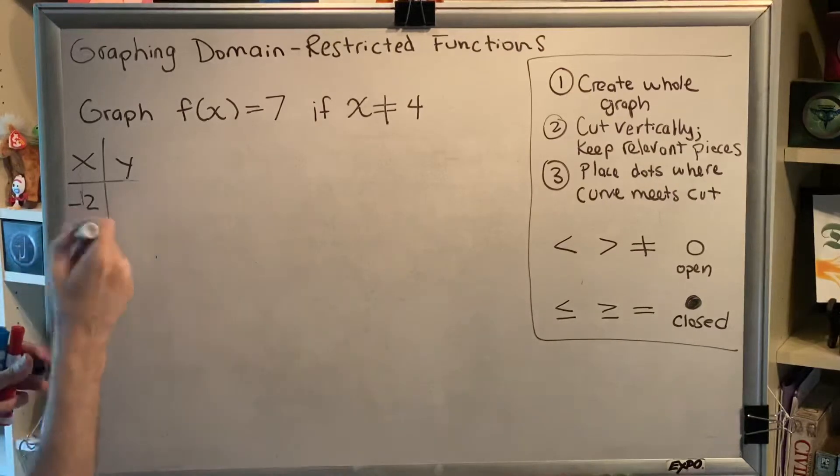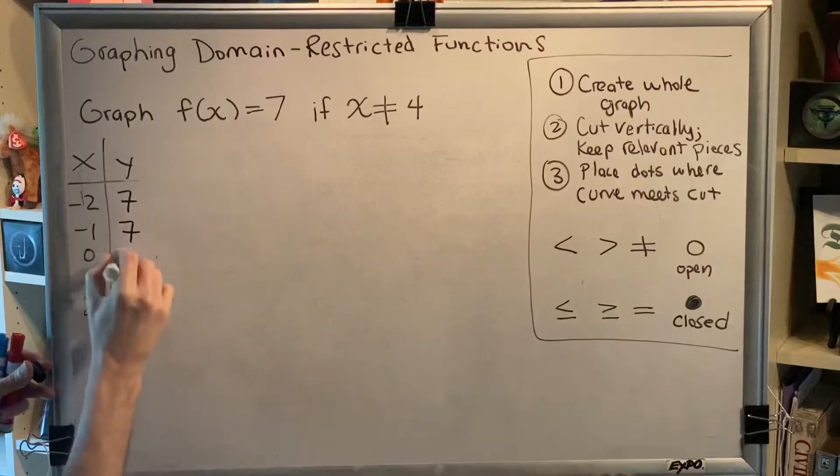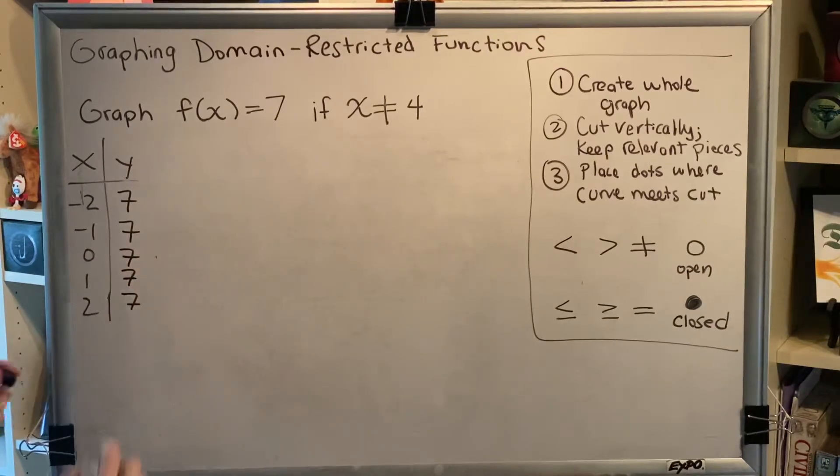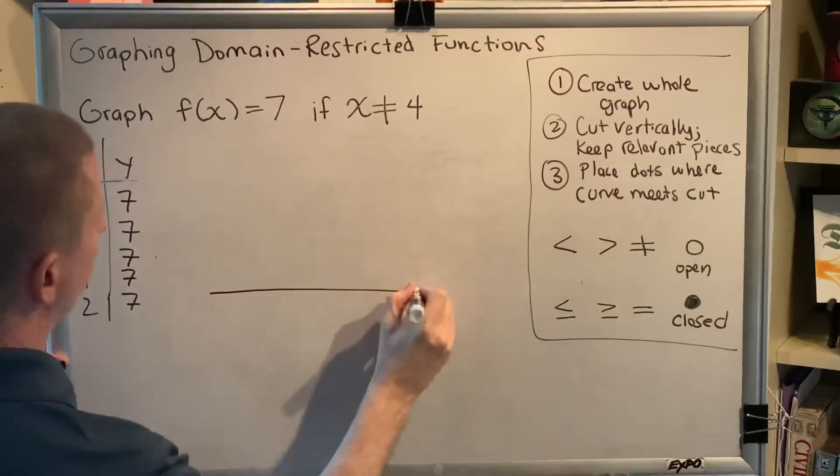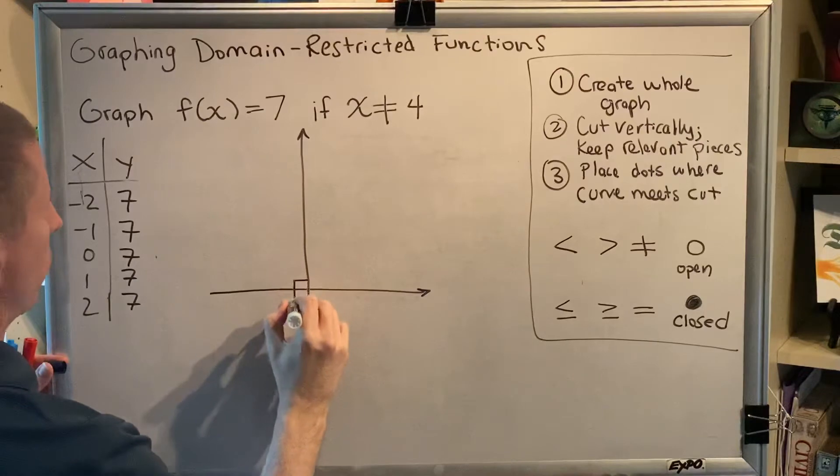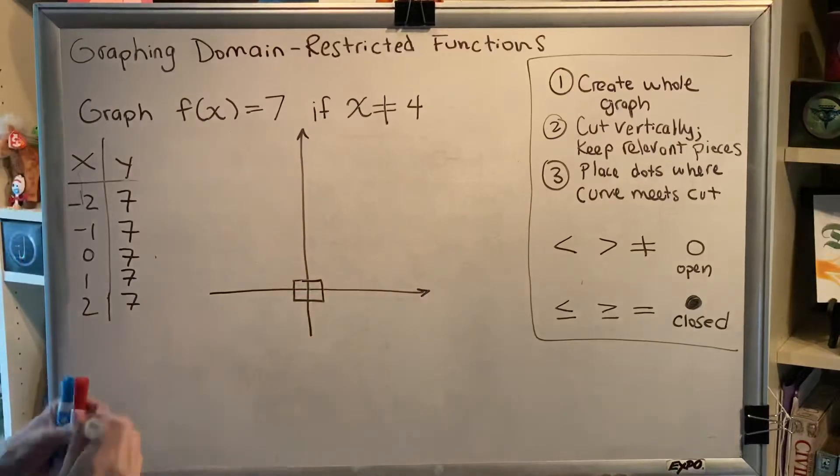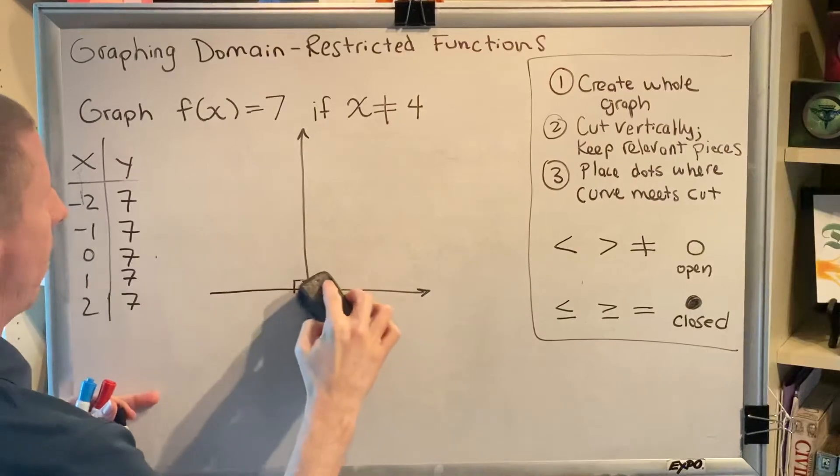So if x is negative 2, the output is 7. If x is negative 1, the output is 7. 7, 7, 7. So when I make my entire graph, I'm going to make it like this. I'm going to make a square centered at the origin to establish the scale of my drawing, and then erase the corners.